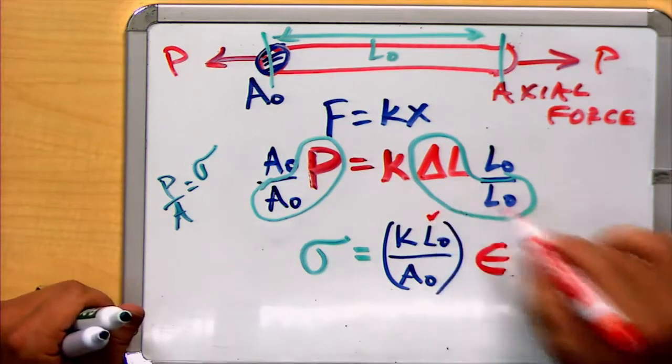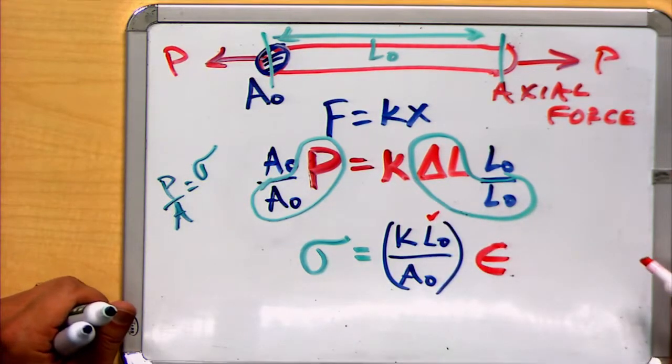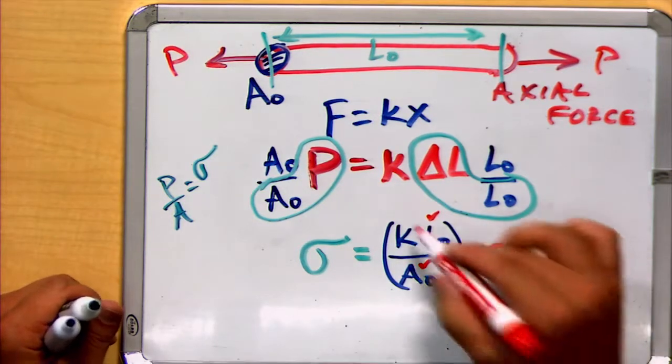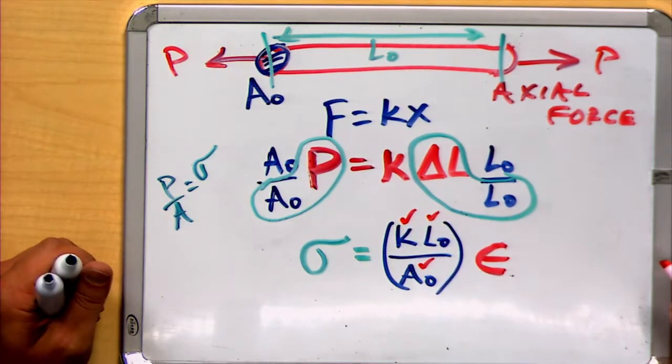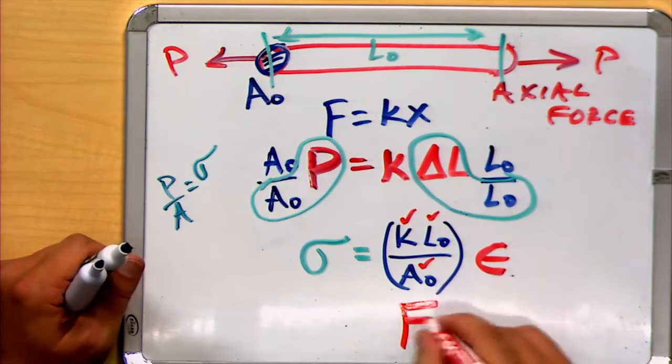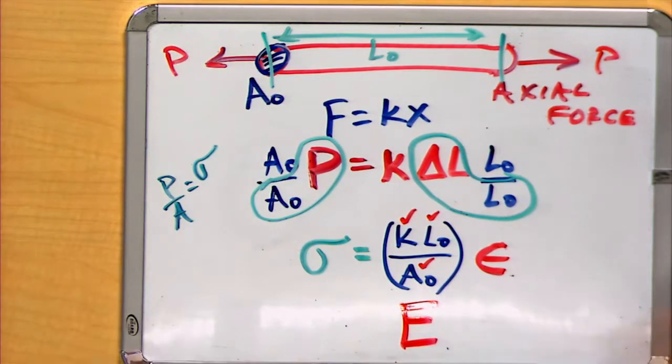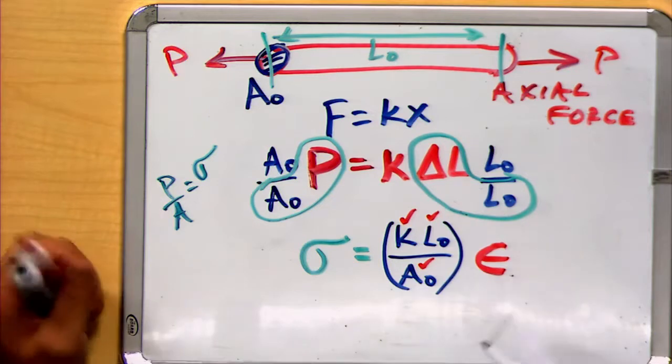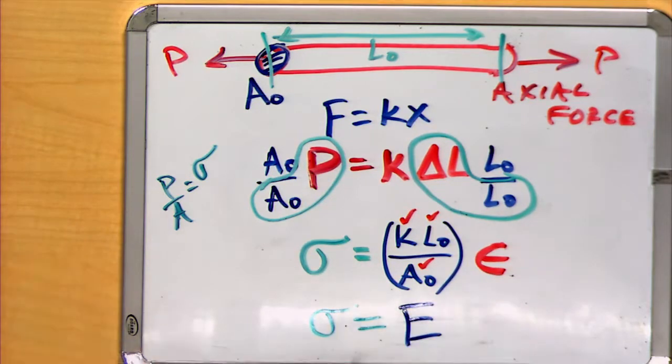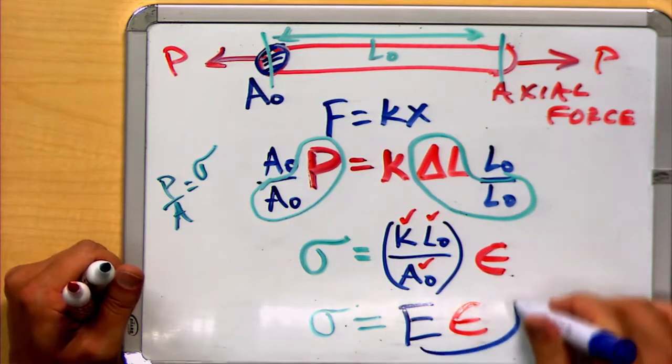Well, our initial length is some value that we're going to consider to be a constant that doesn't change. Our initial area is a value that doesn't change. And our initial stiffness is a value that doesn't change. So this is all, again, one large constant, which we actually have a special letter for. This is the letter E. And our relationship here says that stress is proportional to strain with a constant value of this letter E. This has a name.